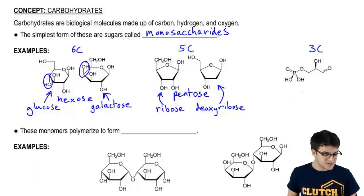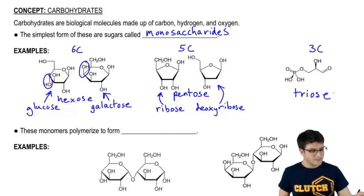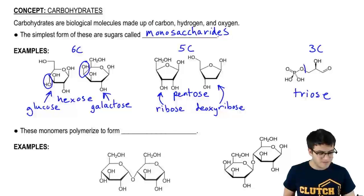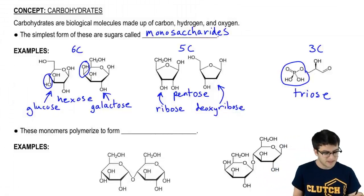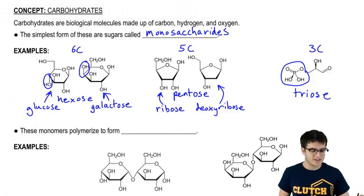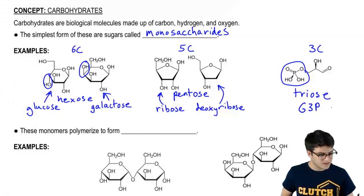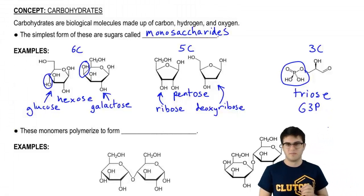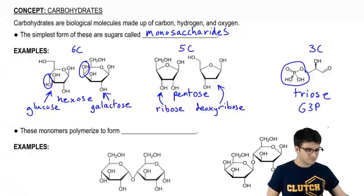This last sugar over here is a three carbon sugar. Can you guess what it would be called? If you thought triose, then you're spot on. Now technically, this is a triose phosphate because it has this phosphate group right there. You might actually recognize this molecule because this is G3P, and this molecule is the end product of photosynthesis.